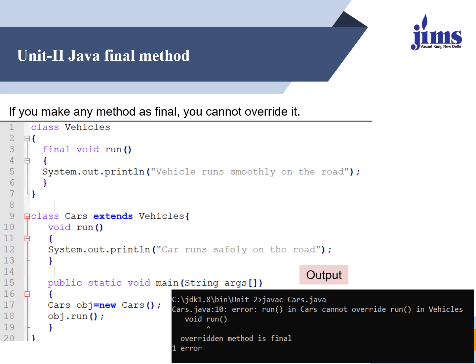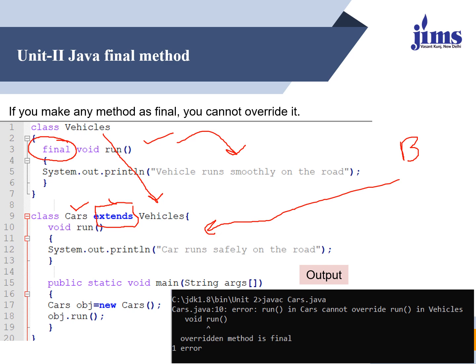In another program, we have one function where the method is final. The method name is run and it says "vehicle runs smoothly on the road." I am inheriting this class in a derived class called Cars using the extends keyword. Extends is used to inherit or extend a class from the base class when creating a derived class.